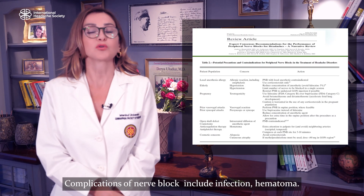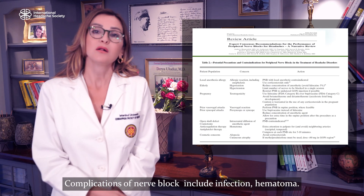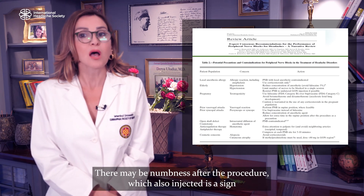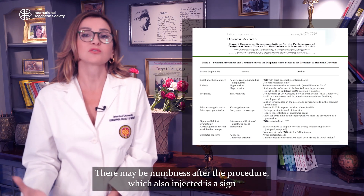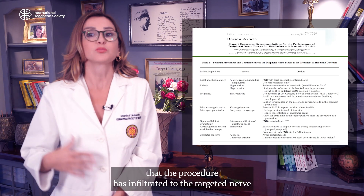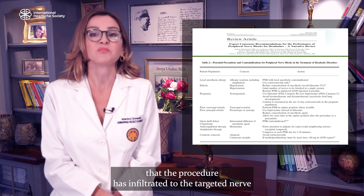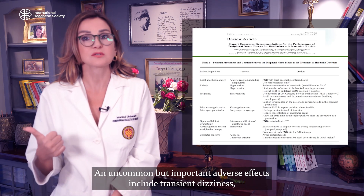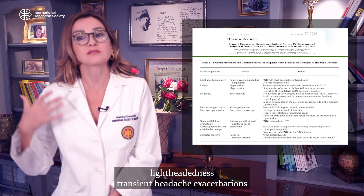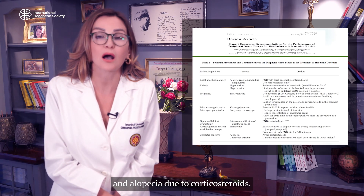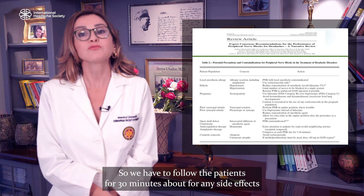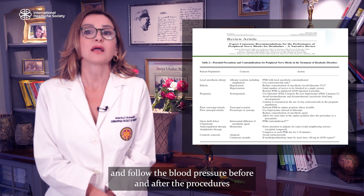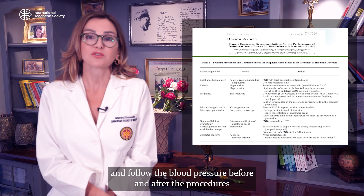Complications of the nerve block include infection, hematoma, vertigo, nausea, and hypersensitivity. There may be numbness after the procedure, which is also a sign that the anesthetic has infiltrated to the targeted nerve. Uncommon but important adverse effects include transient dizziness, lightheadedness, transient headache exacerbations, and alopecia due to corticosteroids. Patients should be monitored for 30 minutes after the procedure for any side effects, and blood pressure should be checked before and after the procedure.